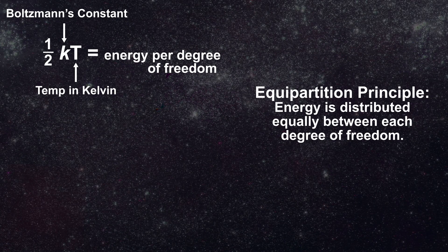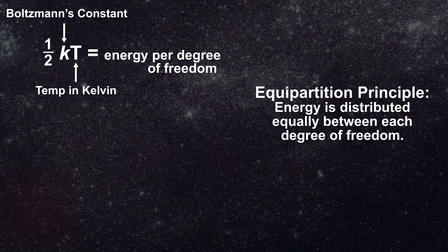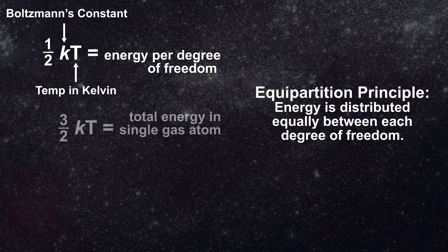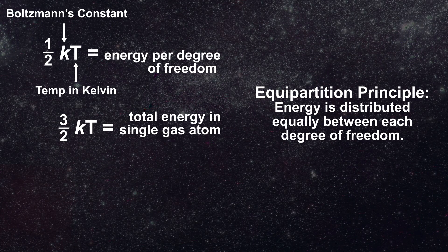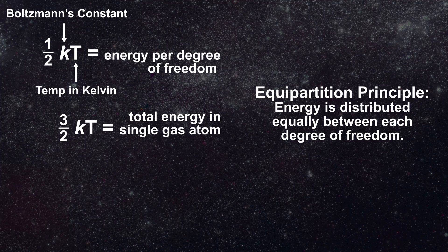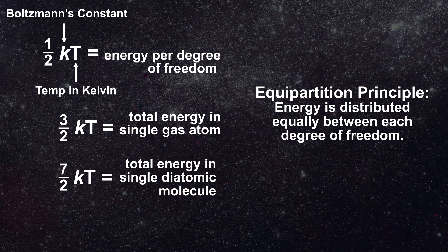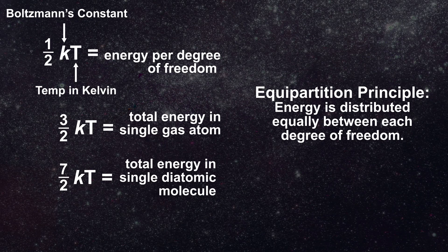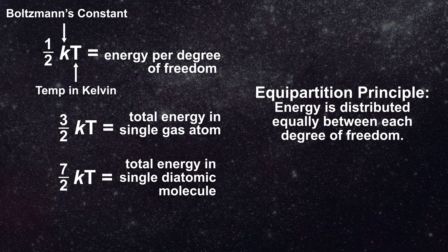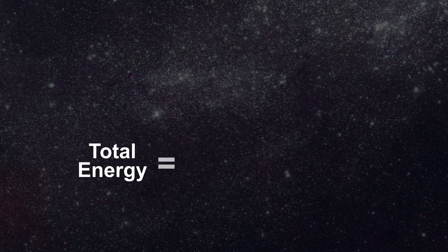Therefore if you consider a single atom in a monoatomic gas its total energy is equal to three halves kt since it has three possible degrees of freedom. Conversely a diatomic molecule like hydrogen has a total energy equal to seven halves kt since the presence of a bond between the two atoms creates four additional degrees of freedom.